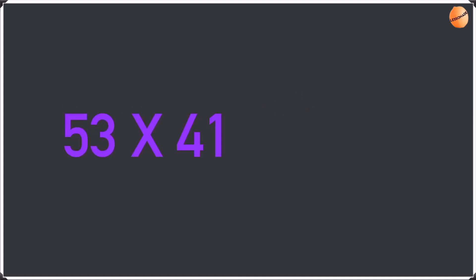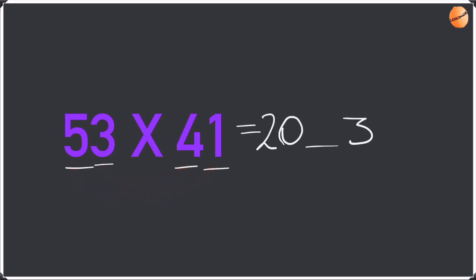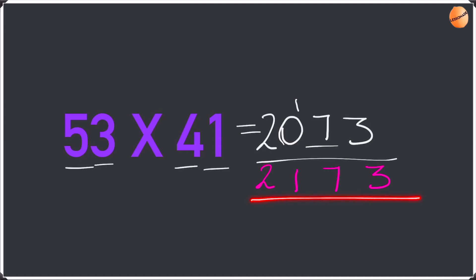Now let's do 53 times 41, a bit faster. Last digit: 3 times 1 is 3. Write the gap. First digit: 5 times 4 is 20 — write the 20. Multiply the numbers like this: 3 times 4 is 12, plus 5 times 1 is 5, equals 17. Write the 7 and take the 1 as a remainder. Adding up: 3, 7, 0 plus 1 is 1, and 2. So the answer is 2173.